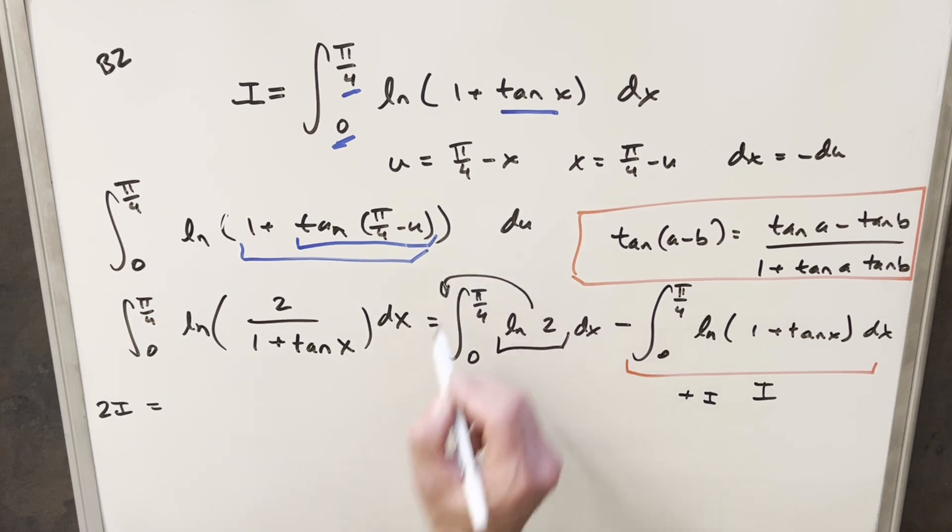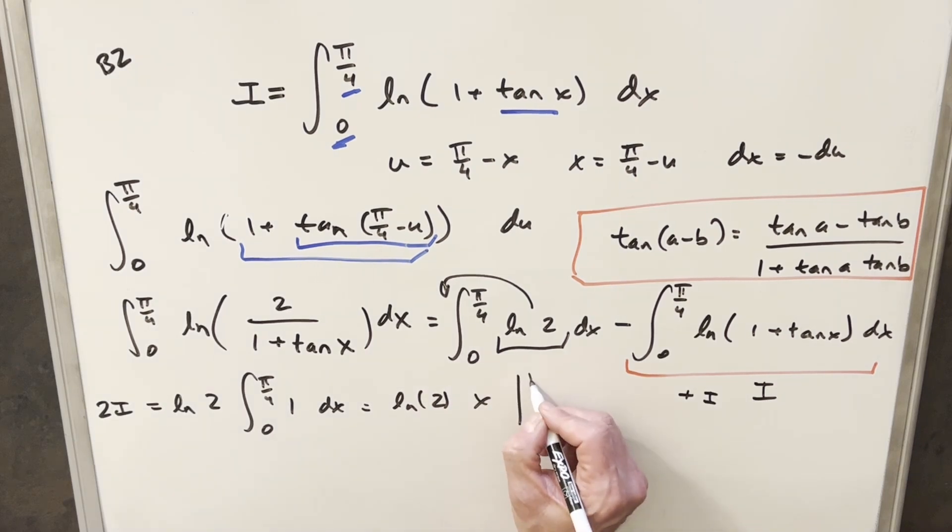And then to make it clear, I'll just take this natural log of 2 up front of the integral, and we're just integrating 1 from 0 to π/4. But of course, integral of 1 is just going to give me an X that we have to integrate from 0 to π over 4. And so evaluating this at 0 is just going to be 0. So we just need to plug in π over 4.